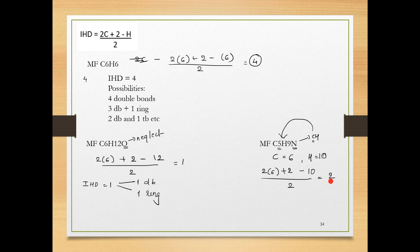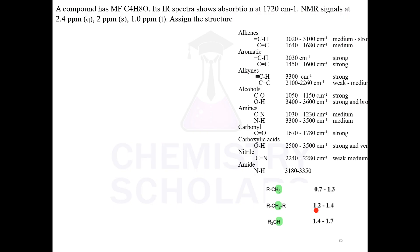This is 2 times 6, 12 plus 2 is 14, 14 minus 10 is 4 divided by 2. It's 2. The answer is 2. Now what are the possibilities? If the IHD is 2, what are the different possibilities? It could have 2 double bonds, it could have 1 double bond plus 1 ring. If it is 2, it could also have 1 triple bond. These are the different possibilities that are possible if you have to calculate only IHD.